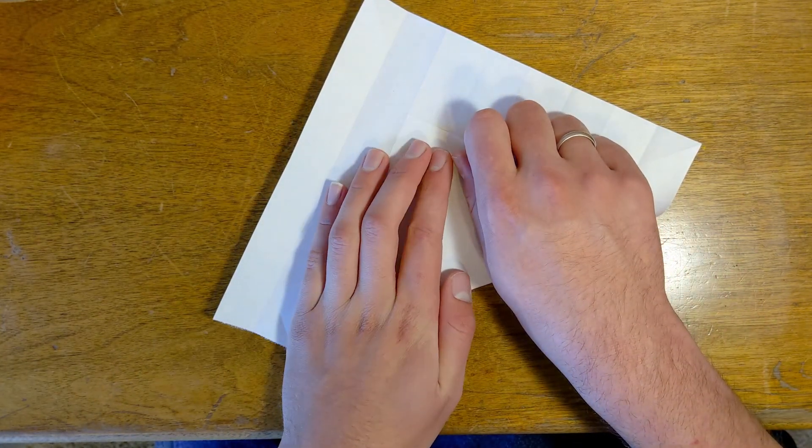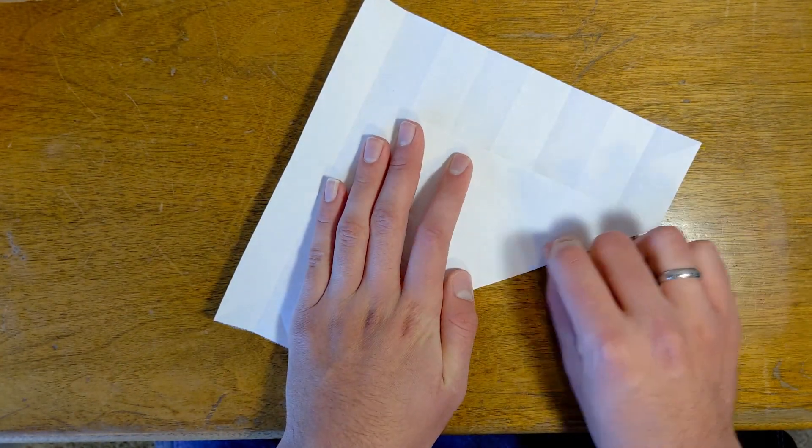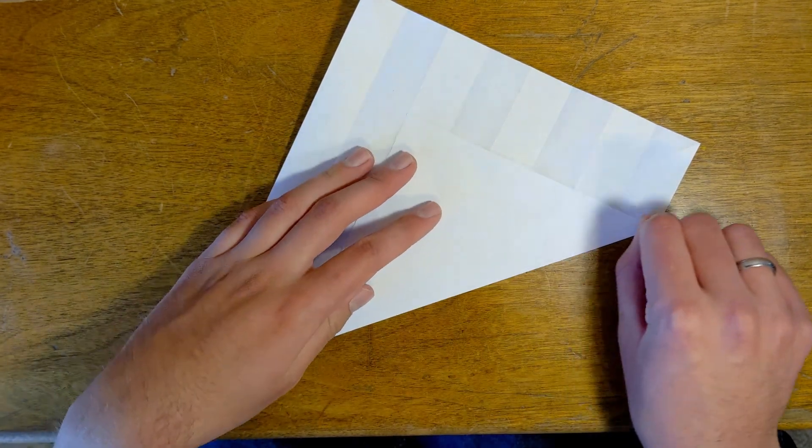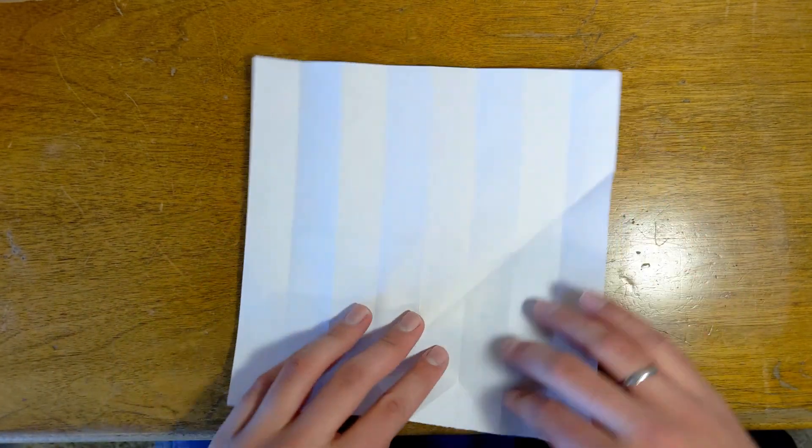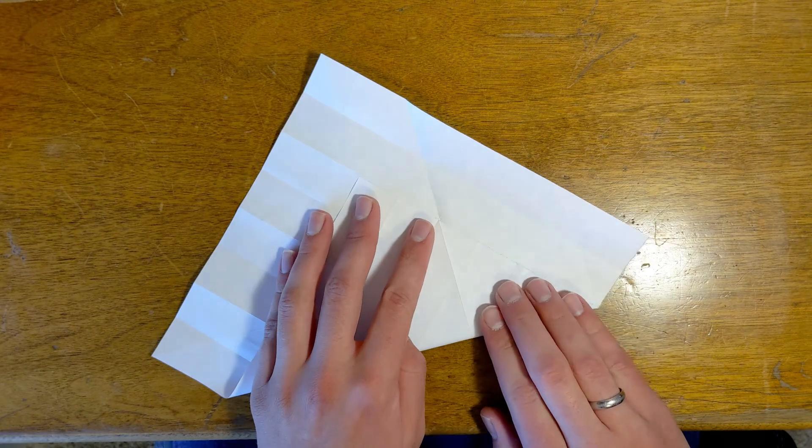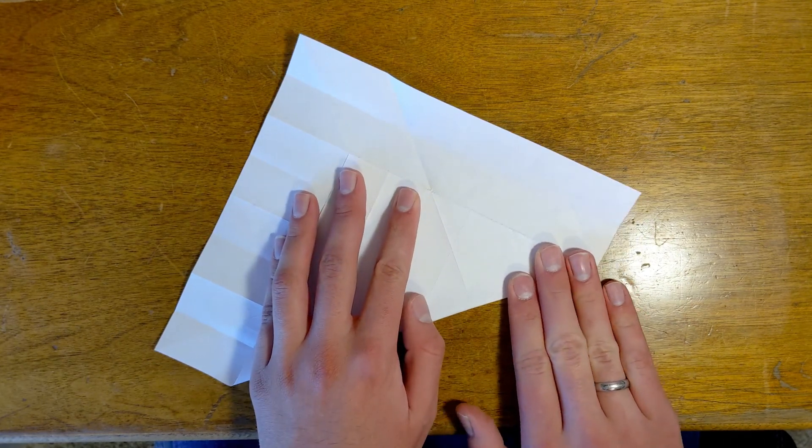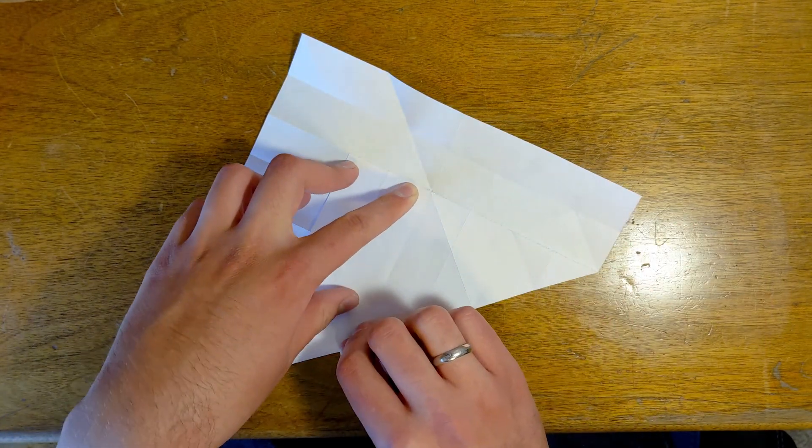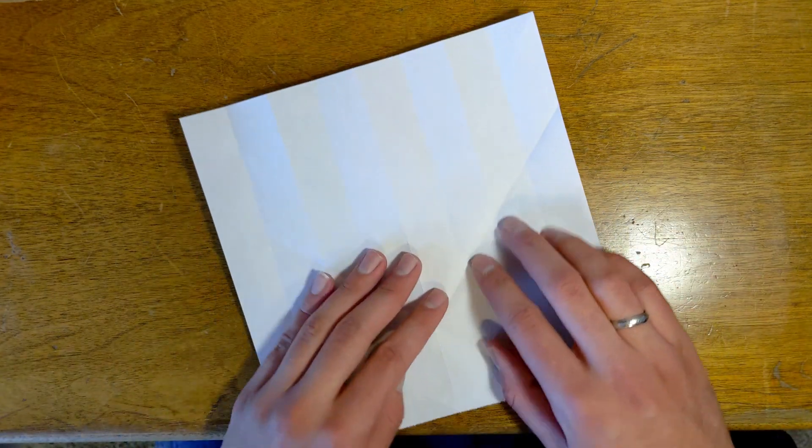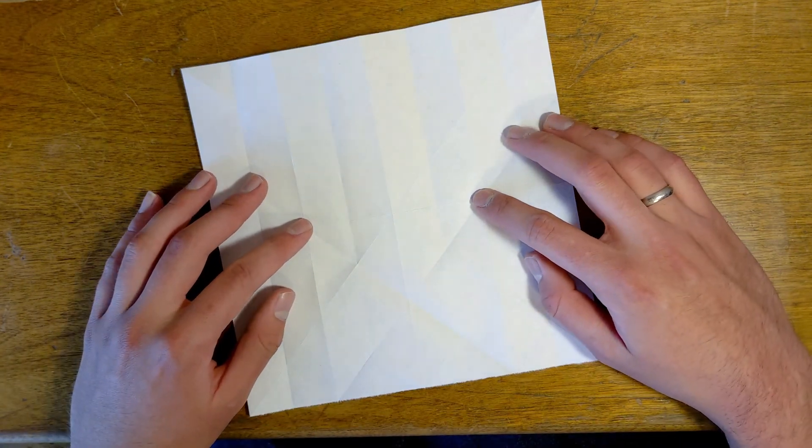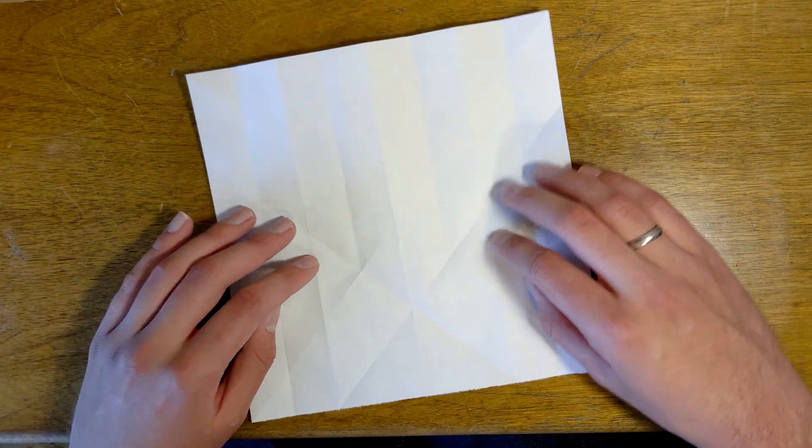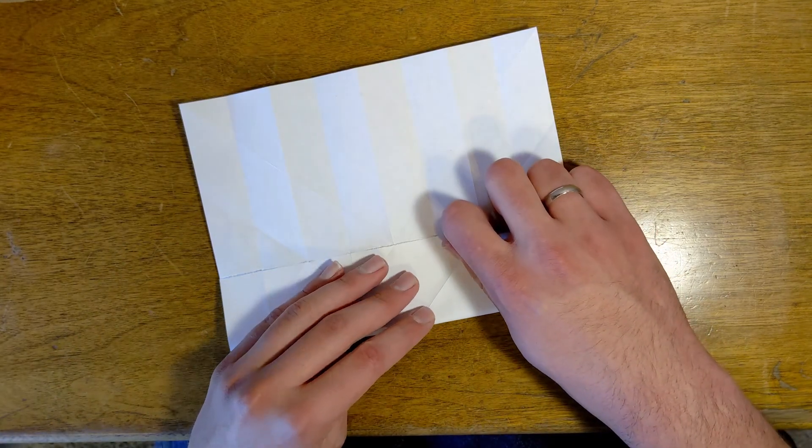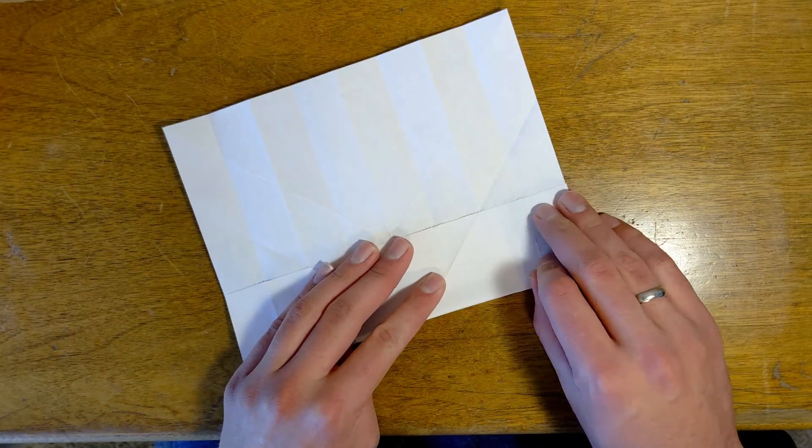Next we're going to extend this one crease line, not all the way. You just want to fold to the very center line right there and then go ahead and fold this up to the center.